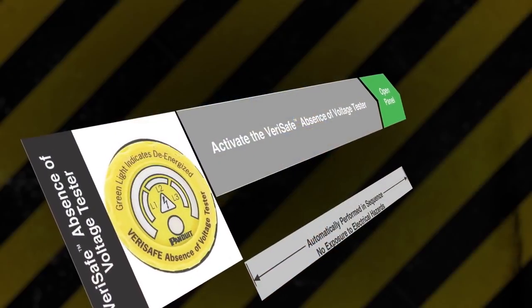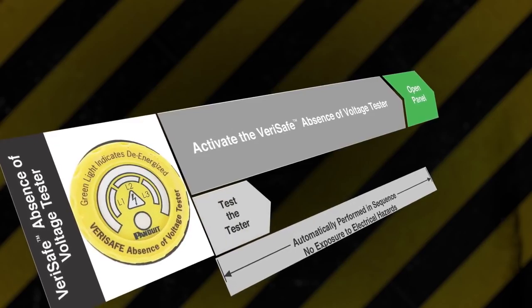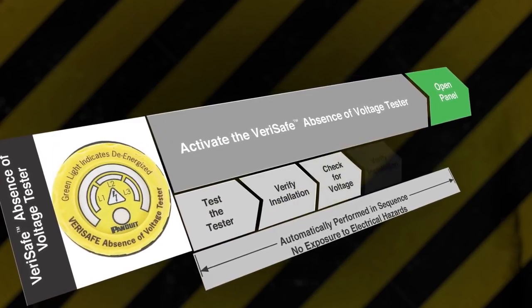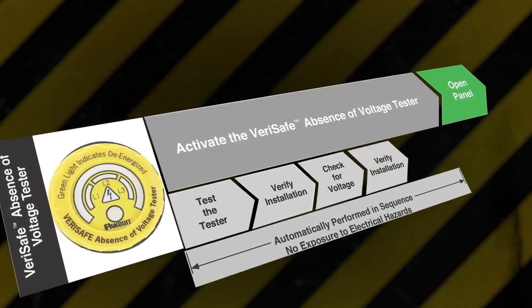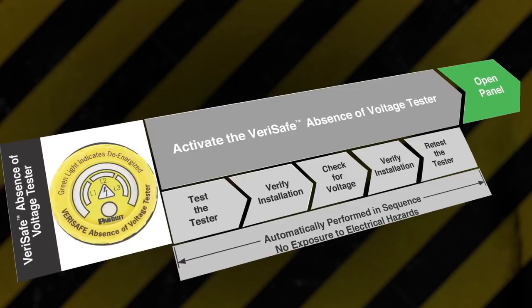This installed tester automates the absence of voltage test by testing the tester, verifying installation, checking for voltage, again verifying installation, and then retesting itself. These steps are performed in a few seconds with the touch of a button.